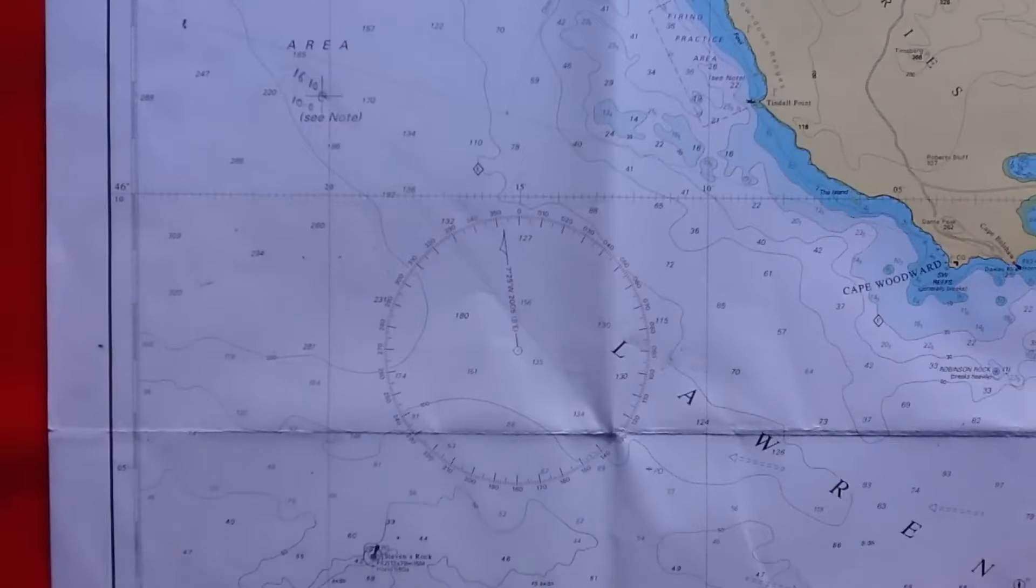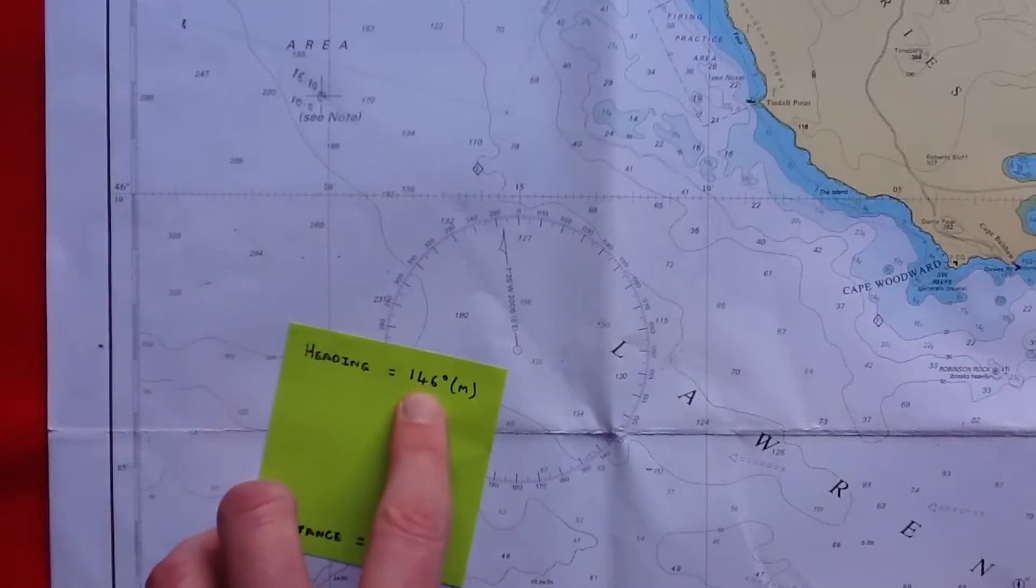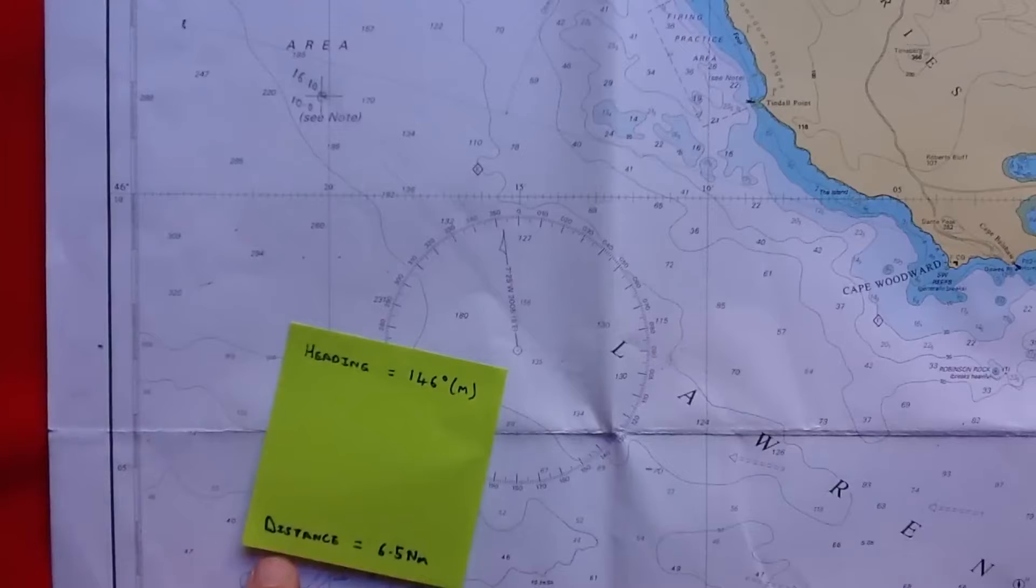We need to know two things to plot a dead reckoning position. The first is our heading, the direction we're travelling in. In this case, 146 degrees magnetic on our compass. The second thing is how far we travelled in a set time. In this case, 6.5 nautical miles in one hour.